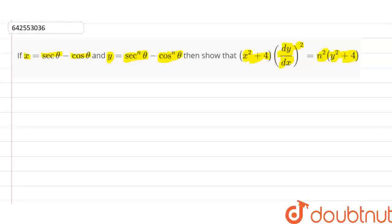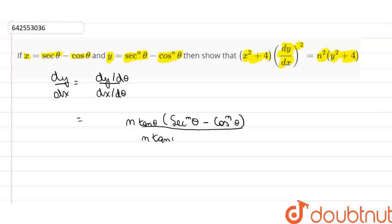Now, first of all, let us find dy by dx. Since we can see that θ is a parameter, therefore dy by dx will be equal to dy by dθ divided by dx by dθ. So, we get dy by dθ will be equal to n tanθ into sec nθ minus cos nθ divided by n tanθ into sec nθ minus cos nθ.